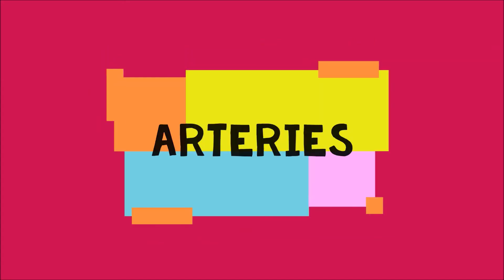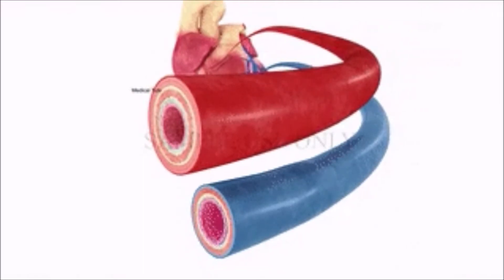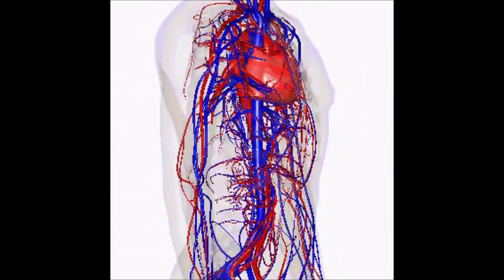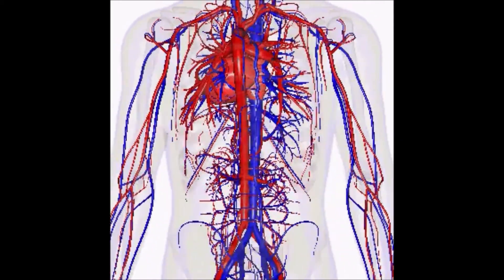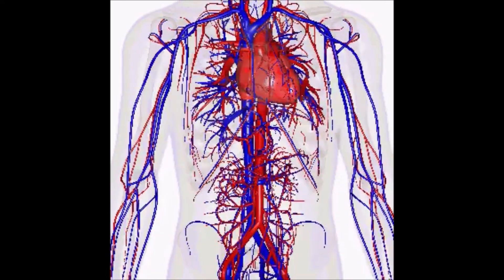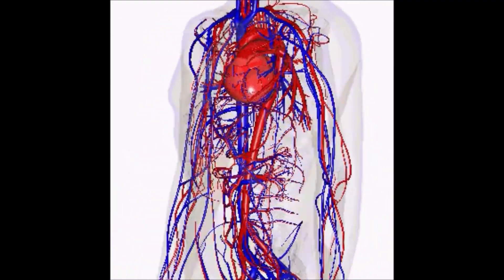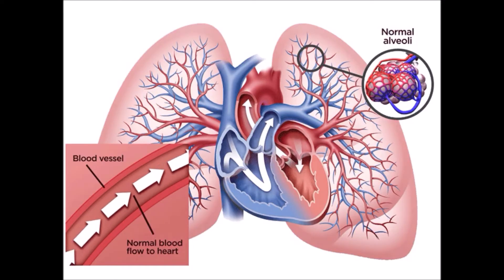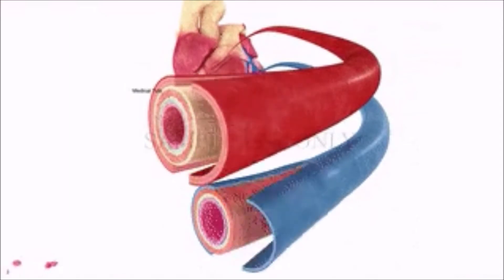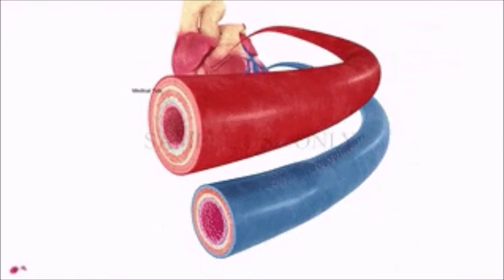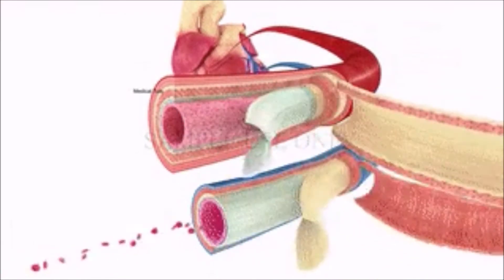Arteries are thick-walled, elastic blood vessels which carry blood from the heart to various parts of the body. The main artery, the aorta, carries oxygenated blood from the left ventricle to all parts of the body except the lungs. The pulmonary artery is the only artery which carries deoxygenated blood from the right ventricle to the lungs for purification. The thick walls allow blood to flow with high pressure.